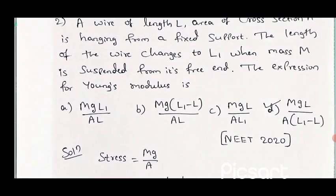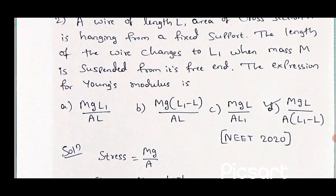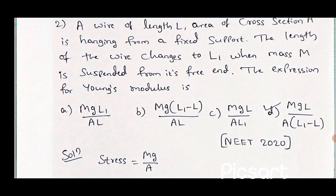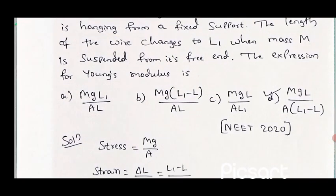Here we have the formula for stress: stress equal to force by area. Here they did not give the force magnitude directly, but they gave the mass and gravity. So force equals Mg, where M is the mass suspended and g is the acceleration due to gravity. A is the area of cross section.